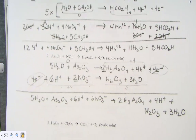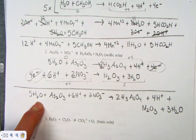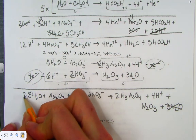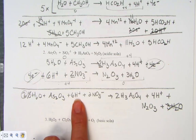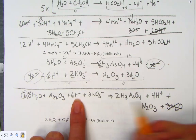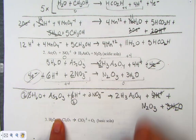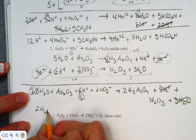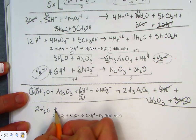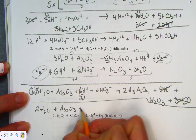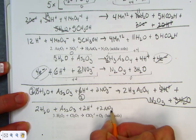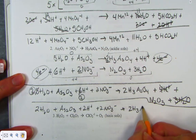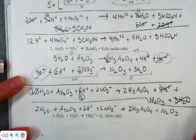What can we simplify? There are 5 waters on the left and 3 on the right — eliminate 3, leaving a net of 2. There are 6 protons on the left and 4 on the right — eliminate 4, leaving a net of 2. The clean final answer: 2 H₂O + AS₂O₃ + 2 H⁺ + 2 NO₃⁻ → 2 H₃AsO₄ + N₂O₃.